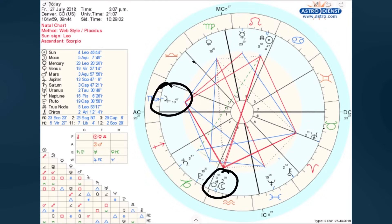Most of you probably know your Sun sign — here the Sun is in Leo, so this person would be a Leo because their Sun was in that sign of the zodiac when they were born. But they have other planets in other signs of the zodiac, like Mercury in Virgo, the Moon in Aquarius, Jupiter in Scorpio, and so on. Part of the first realization that everybody has when they start studying their birth chart is that astrology is not just about the Sun sign. Everyone has a mixture of planets in different signs of the zodiac, which creates a sort of unique character profile for each person.